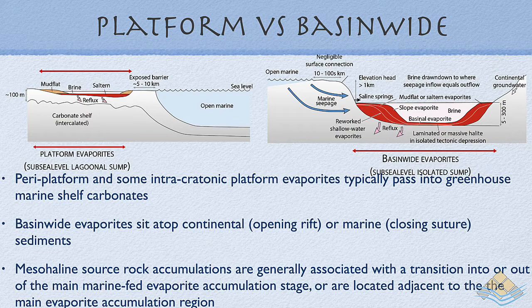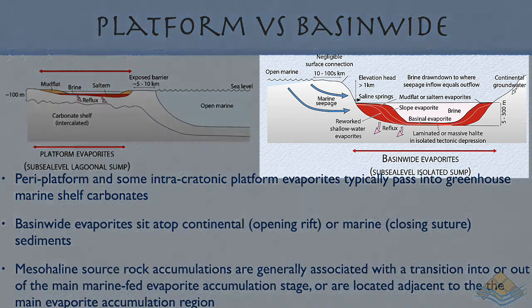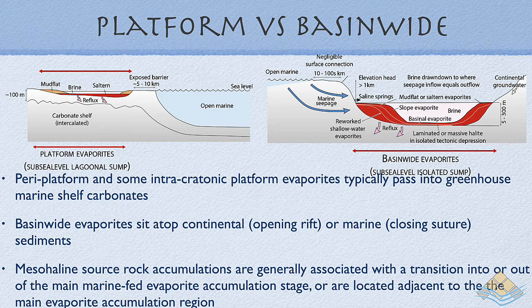Here are the two end members of this ancient evaporitic succession for which we have no modern-day counterpart: platform evaporite successions with extensive, typically subaqueous evaporite beds separating normal to restricted marine platform carbonates, versus the basin-wide evaporite association when whole oceanic basins went evaporitic and formed very thick and broad associations of evaporites. Platform evaporites typify greenhouse mode climate and the associated greenhouse eustasy — times when we did not have the high-amplitude, high-frequency fluctuations seen in our current ice age.